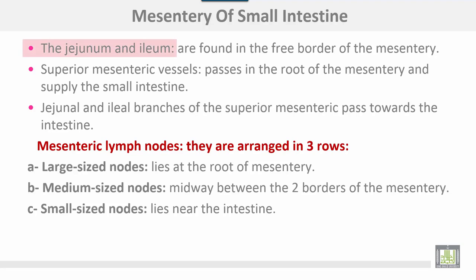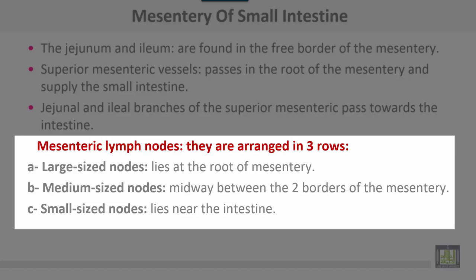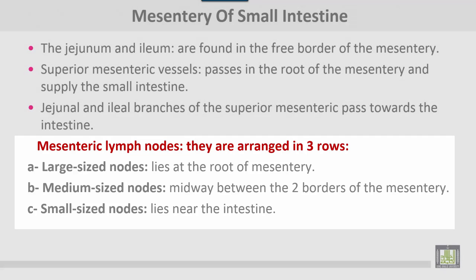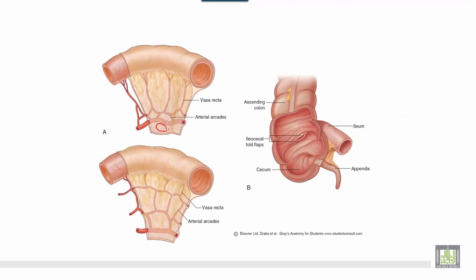The jejunum and ileum are found in the free border of the mesentery. Superior mesenteric vessels pass in the root of the mesentery and supply the small intestine. Branches of the superior mesenteric artery pass towards the jejunum and ileum. Mesenteric lymph nodes are arranged in three rows: large-sized lymph nodes at the root of the mesentery, medium-sized nodes midway between the two borders, and small-sized nodes near the intestine.